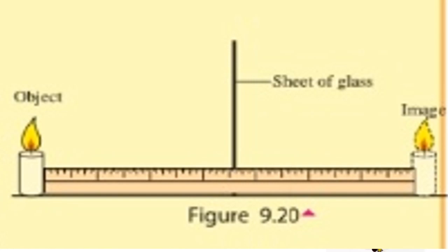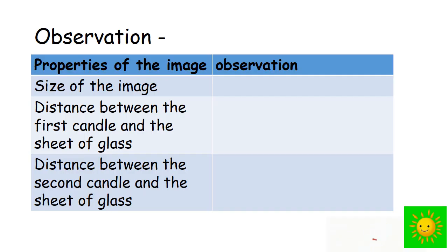Compare the size of the image with the candle. Measure the distances between the first candle and the sheet of glass — that means the object distance — and between the second candle and the sheet of glass — that means the image distance. After that, record your observations with the size of the image, the distance between the first candle and the sheet of glass, and the distance between the second candle and the sheet of glass.